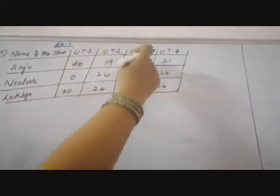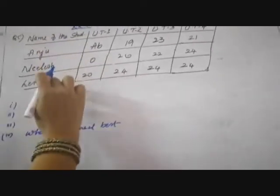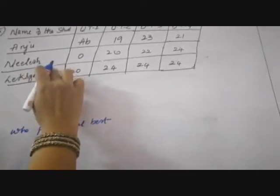Here are the following marks of the test in the particular subject English: unit test 1, unit test 2, unit test 3, unit test 4, and there are 3 students. The fourth question is who performed best. Based on this question you have to find the average of Anju, average marks of Nilesh, and average marks of Lekhya.